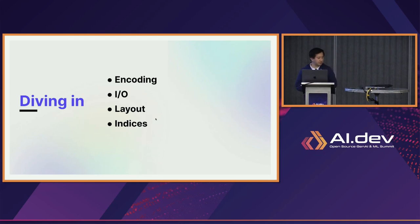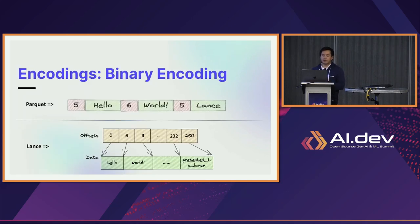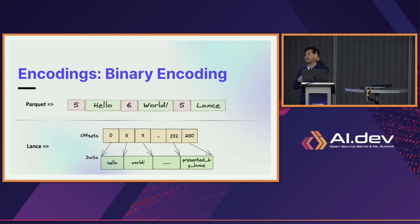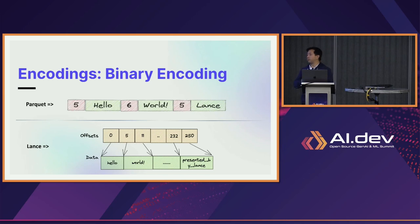I'm going to speed through what makes the Lance format different and how we achieve these performance improvements. First, data layout and encoding: in Parquet, when you have an array of strings, the layout is offset-data, offset-data — so in order to retrieve one row, you have to read the whole row group. Storing integers, reading a thousand integers isn't that bad because you're limited by the minimum block sizes anyway. But if you're thinking about images, embeddings, or point clouds that can be hundreds of kilobytes to hundreds of megabytes per record, then reading the whole row group becomes prohibitively expensive.